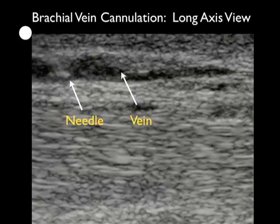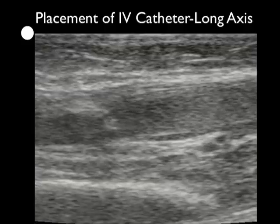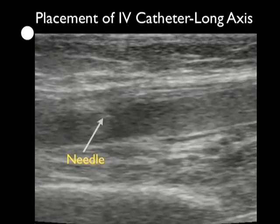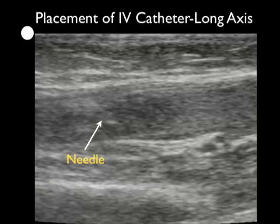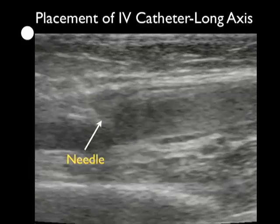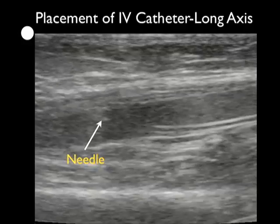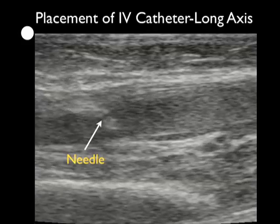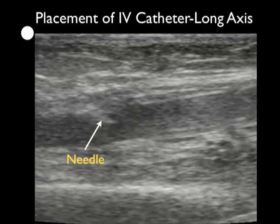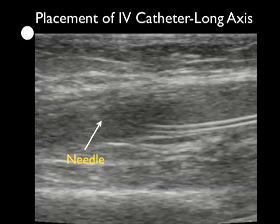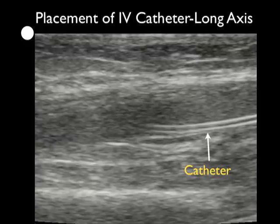At this point we're ready to thread the catheter. This video clip captures a long axis cannulation of a deep arm vein — we can see the needle coming in from left to right and the needle tip permeating through the vessel lumen. Now we can see the actual threading of the plastic catheter. We'll freeze it so we can see the plastic catheter securely within the lumen of the vessel. It's nice to visualize the catheter within the vessel lumen to ensure there's enough catheter there to deliver medications and fluids without extravasation into the patient's arm.